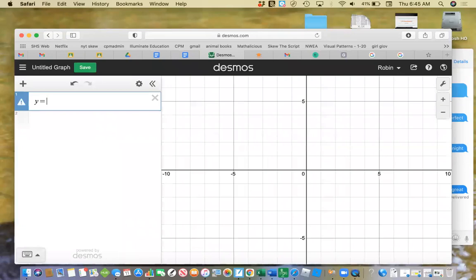So if I do y equals 50 times 1.5 to the x. And you can get that exponent by either hitting shift six or by using that keyboard icon that comes up.